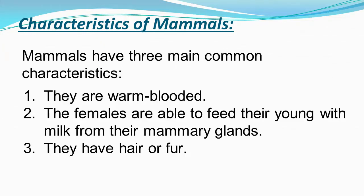Number 1: they are warm-blooded. This means they can survive in any weather or any temperature. Number 2: females are able to feed their young with milk from their mammary glands. And number 3: they have hair or fur.